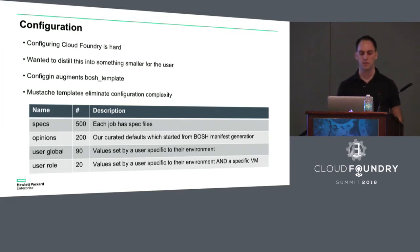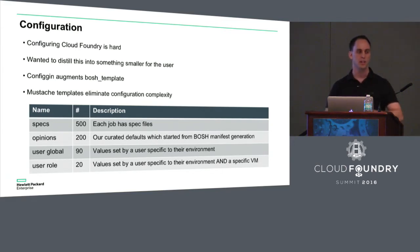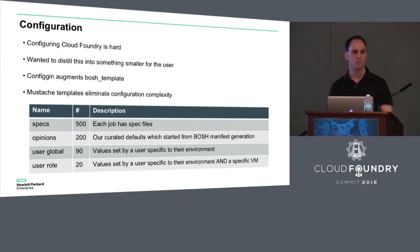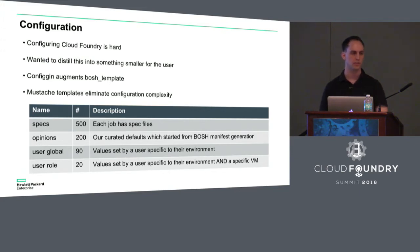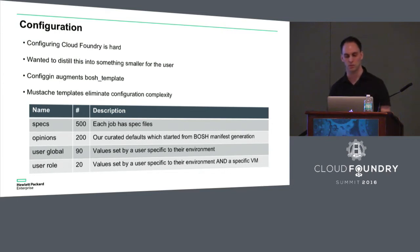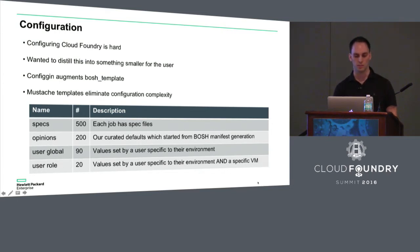User global is for the entire system, where user role is for a specific VM — for example, the API and the Cloud Controller and its jobs could have a specific value for nats.machines. There are about 20 of these.